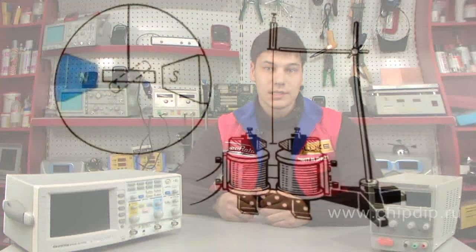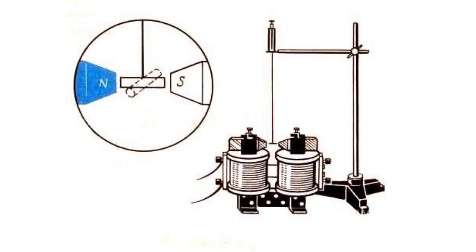Paramagnetism is a property of objects exposed to an external magnetic field to magnetize, acquiring a magnetic moment in the direction of the field. Thus, in any paramagnetic object, the effect of the magnetic field is supplemented by acquired magnetization.